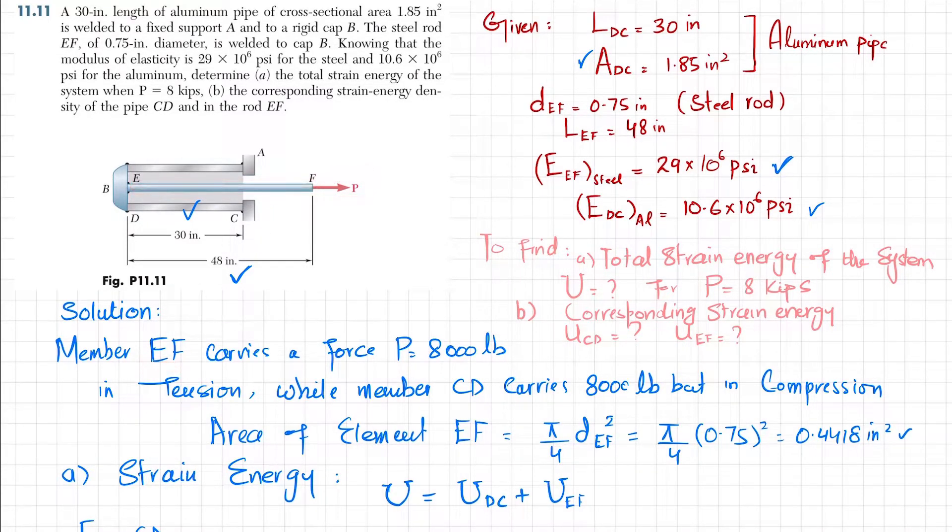So the force is plus 8000 pounds, while member CD is in compression due to this load. This compression will be equal to 8000 pounds but negative.